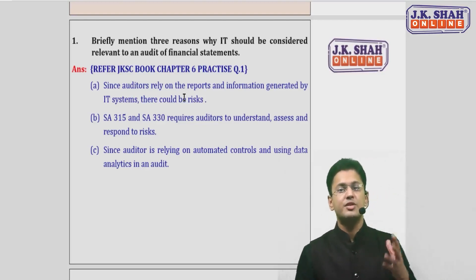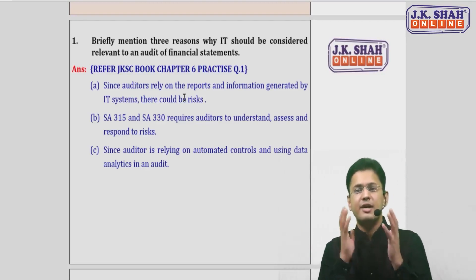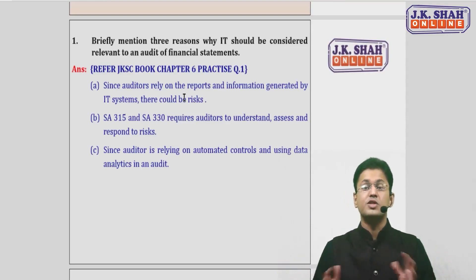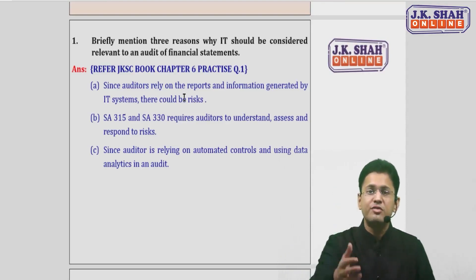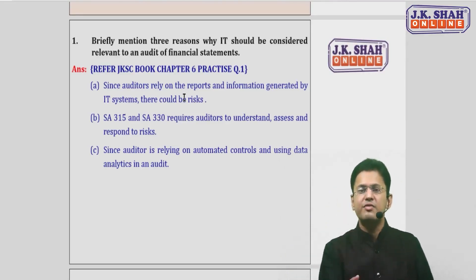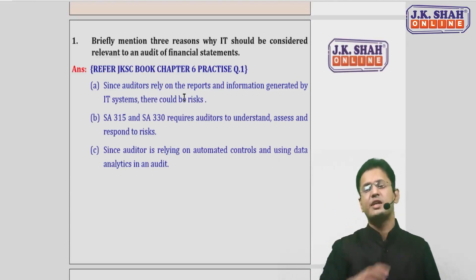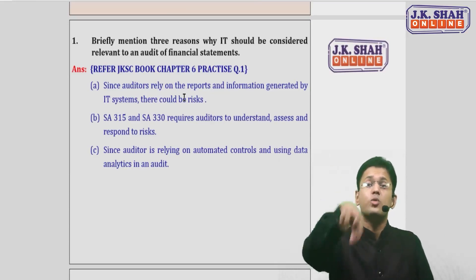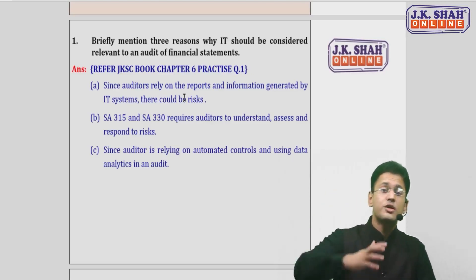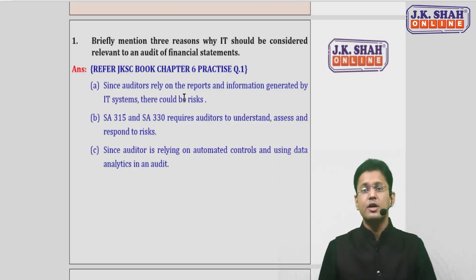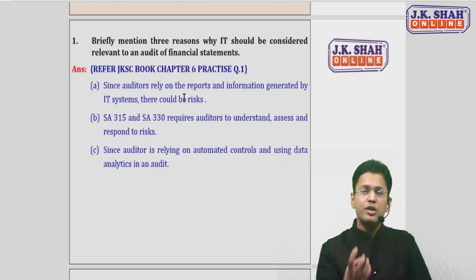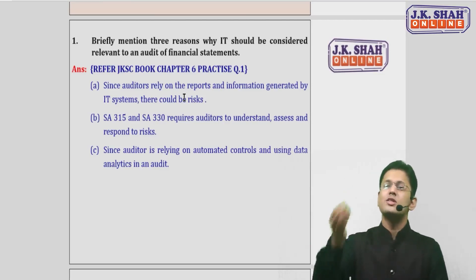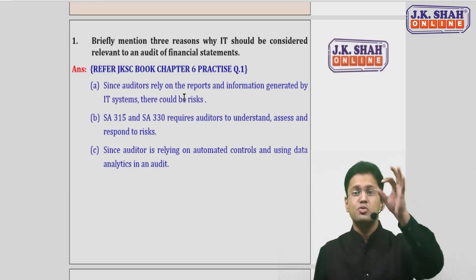SA 315 and SA 330 require the auditor to understand, identify, assess, and respond to risk — even if it arises from the IT system. Third, since the auditor is trying to rely on automated controls built into the application, and since the auditor is using data analytics techniques in auditing, relying on automated controls and using data analytics cannot be done without considering IT relevant for the audit. These are the basic three reasons — a small but very important question.